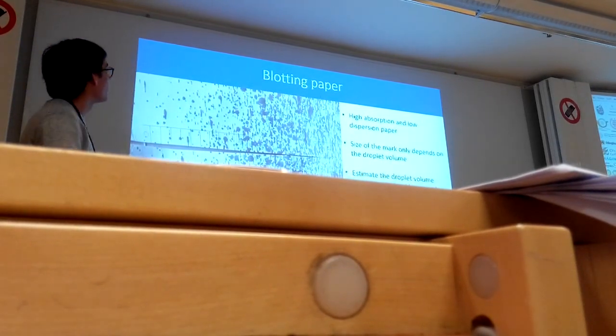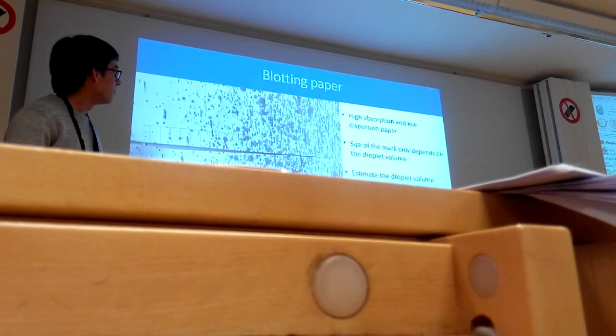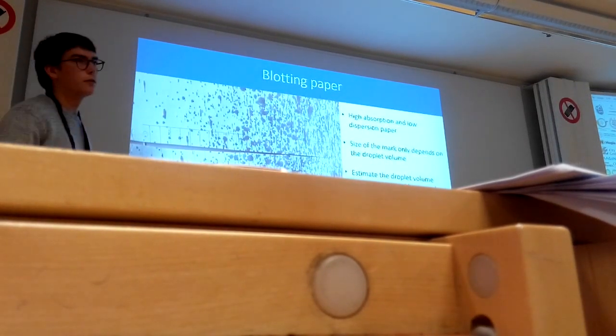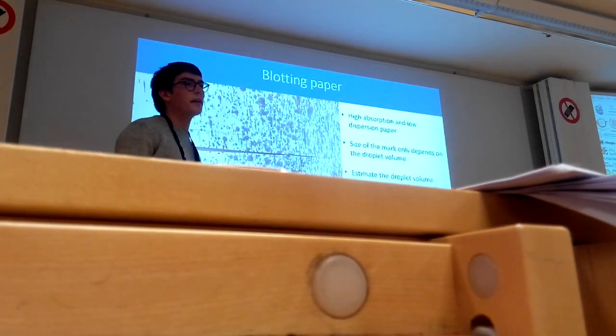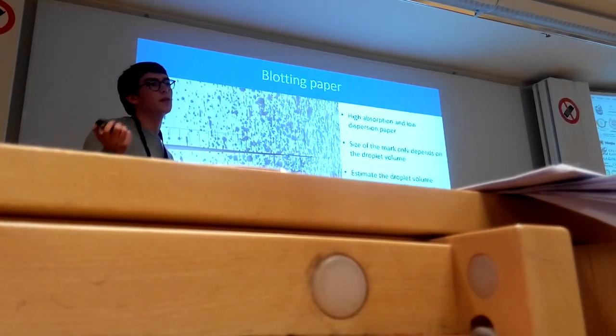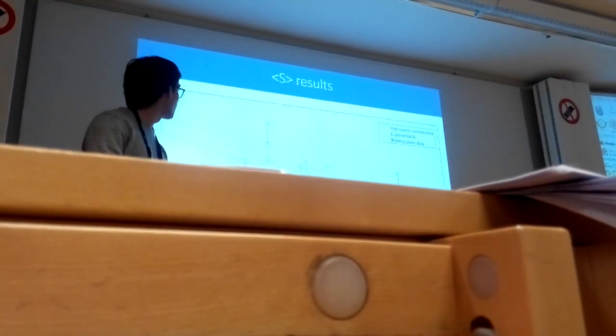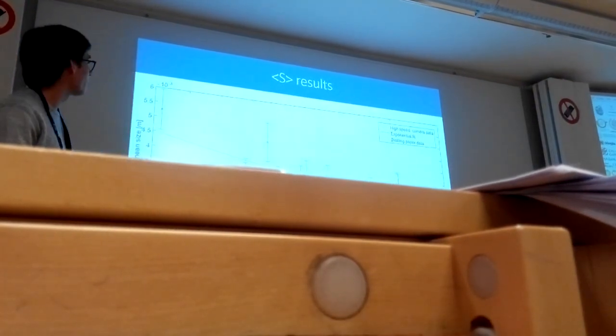The blotting paper has high absorption and low dispersion, so that the size of the mark only depends on the droplet volume. We can calibrate what would be the size of the mark using droplets of known volume.